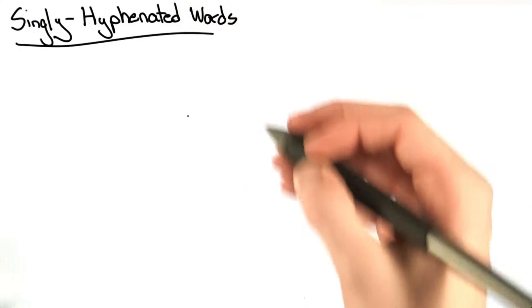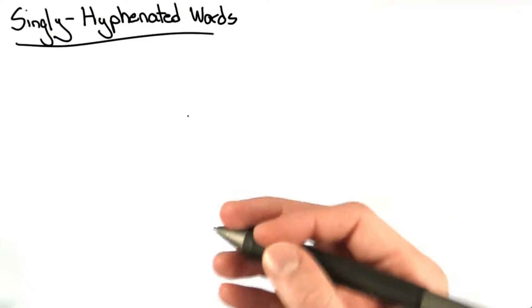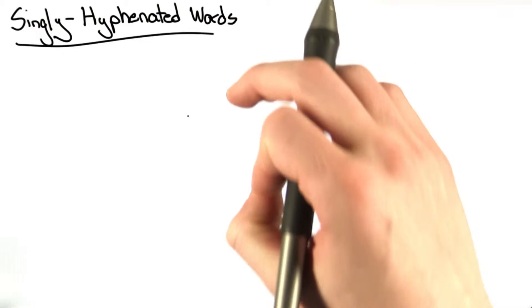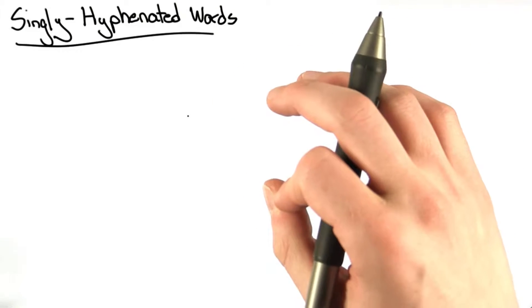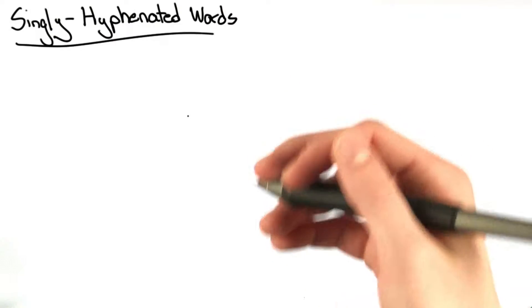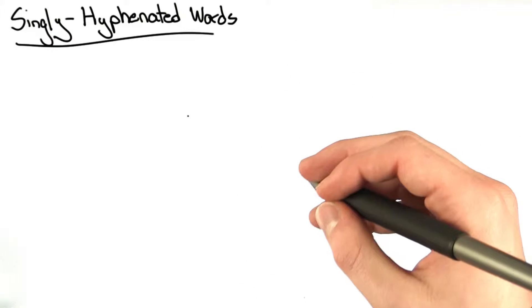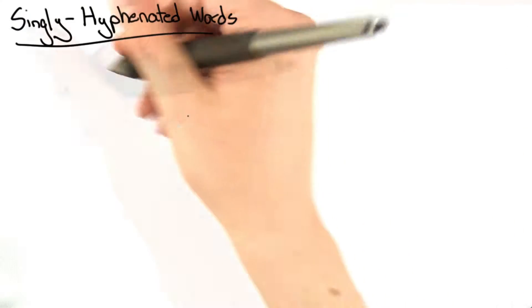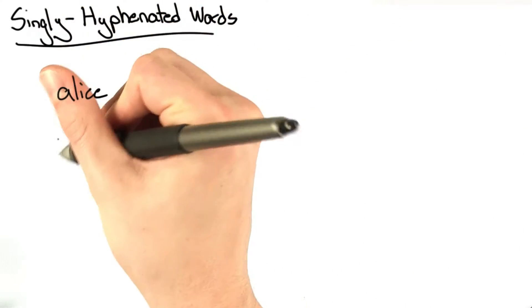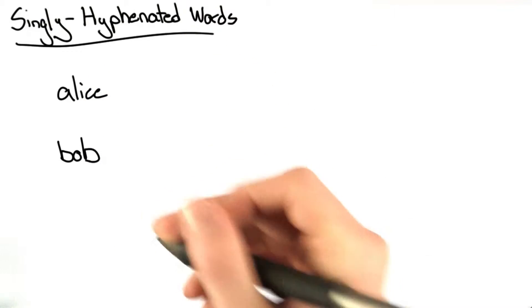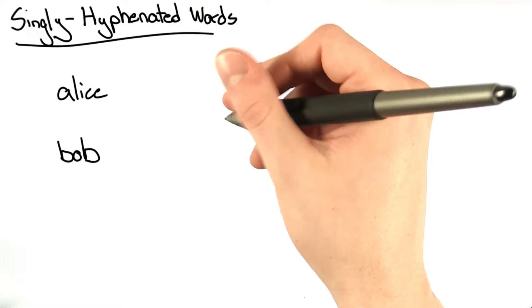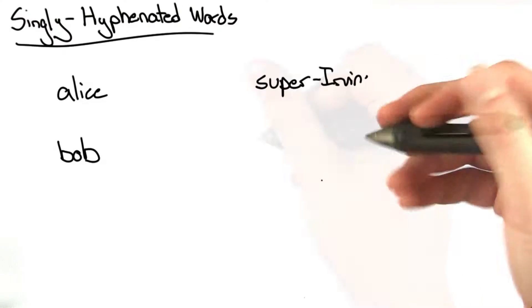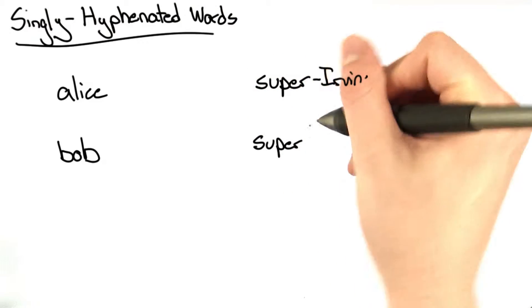In this problem — singly hyphenated words — we're going to test our ability to use the OR operator and the ability to group regular expressions. We're going to write a regular expression that matches two types of words. Normal words, such as Alice and Bob, and also those with a single hyphen, such as super-urban. We won't perfectly match a string such as super-mega-urban.